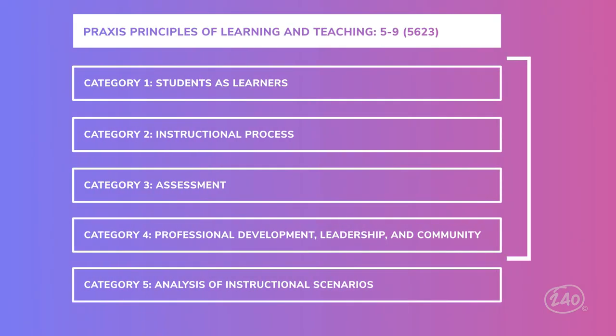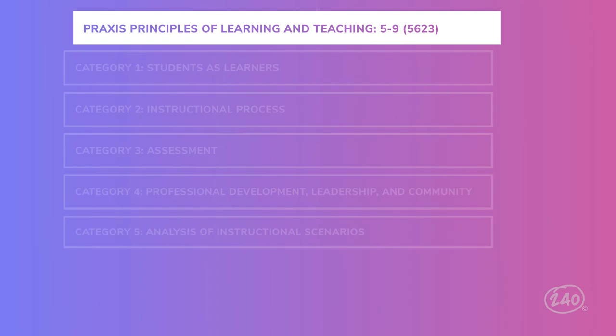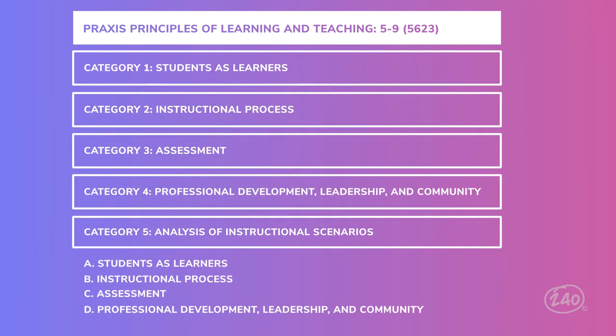The Selected Response questions are worth 75% of the overall score, and the CRQs are worth 25%. Even though they're worth a smaller percentage, thinking about writing essays on your exam might make you nervous. But the topics you'll write your essays about match the first four content categories, so the studying you do for the Selected Response portion will also help you prepare for the CRQs. We like to work smarter instead of harder. You'll want to hear more about those CRQs, including tips for answering them — we'll circle back to that.